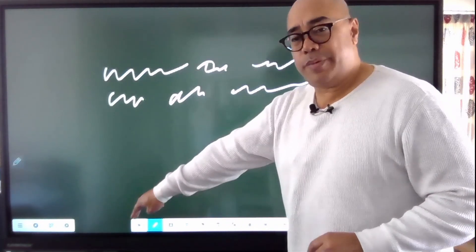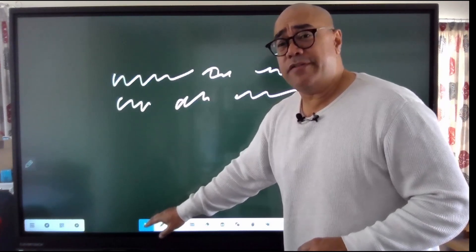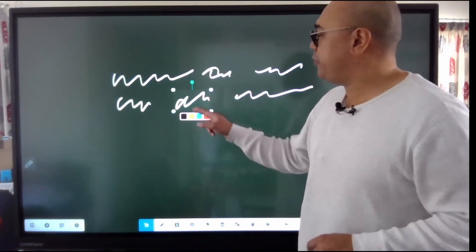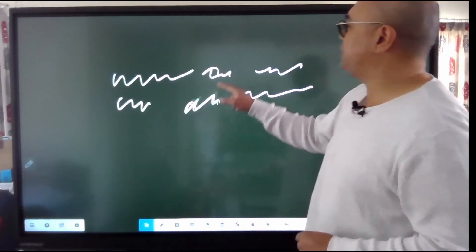So going to the beginning, the pointer for selecting. I can select a part of this and then move it around. It's not supposed to be there, that's supposed to be here.